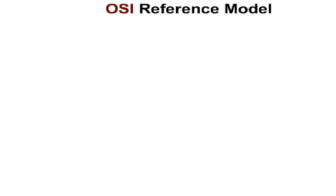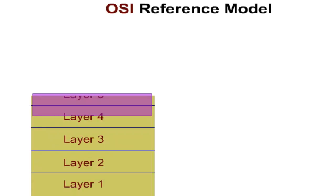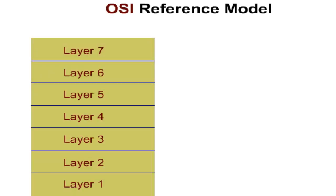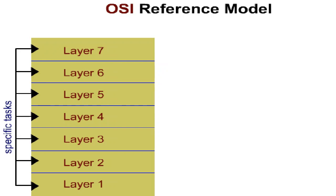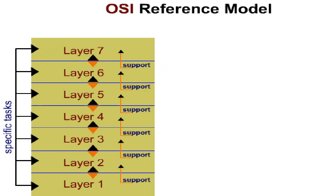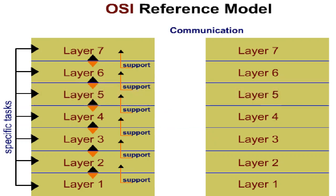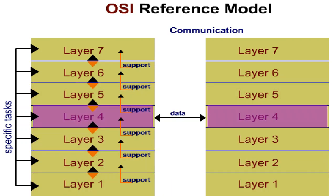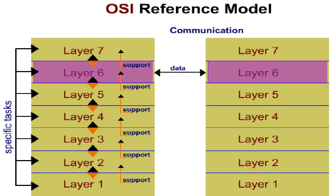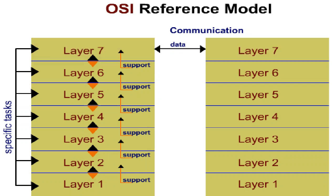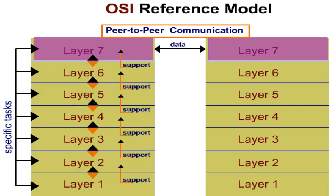OSI is a reference model consisting of seven layers that are based on each other. Each layer has its own tasks. The lower layer always provides support functions for the layer above. For a layer, the data transported in the layers underneath is irrelevant. Communication only takes place between the elements of the same layer. This type of communication between elements belonging to the same layer in different systems is known as peer-to-peer communication.